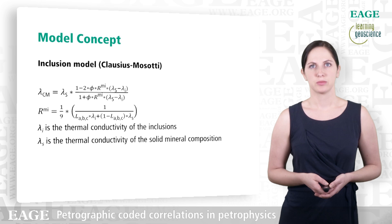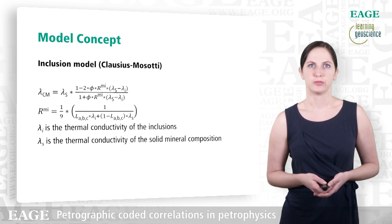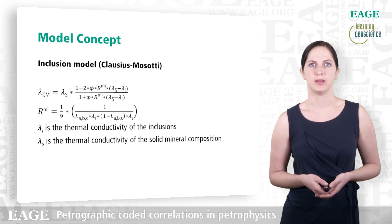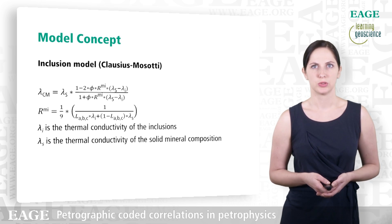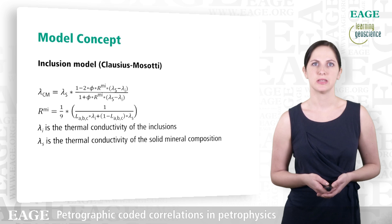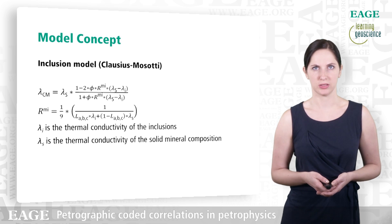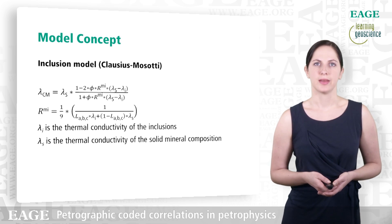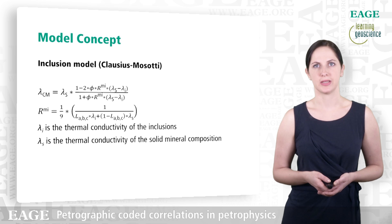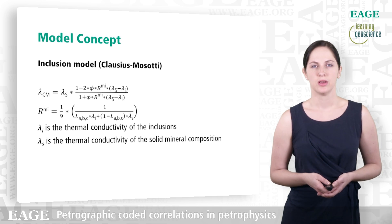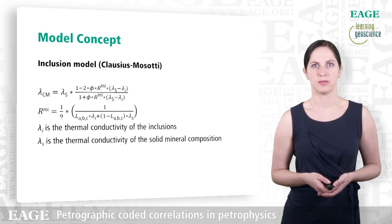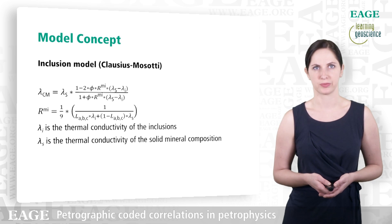The second model for the calculation of thermal properties was the inclusion model by Clausius-Mossotti. Again, I present the two main equations for the calculations, where the RMI covers the porosity effect in different directions.